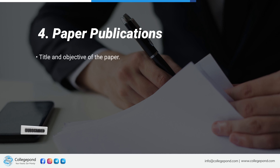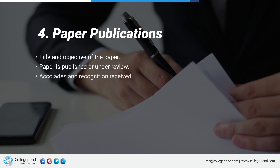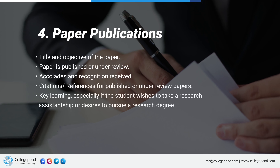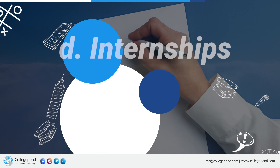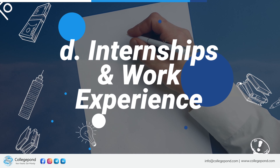For paper publications, the most important things to mention are: the title, whether the paper is published or under review, accolades received, and the citation. If you have a key learning and you're writing for a PhD application, make sure you include that as well.